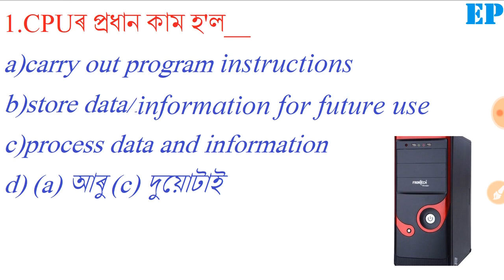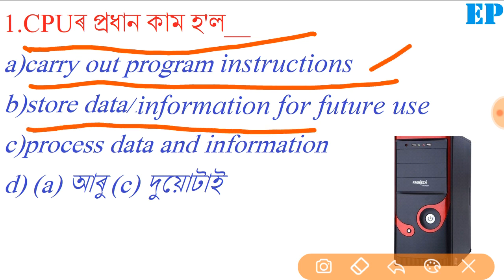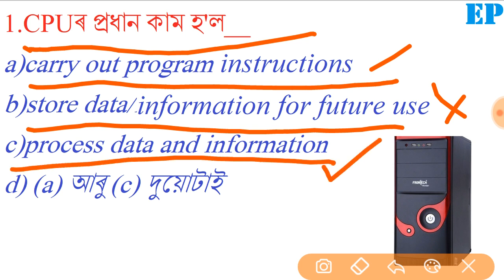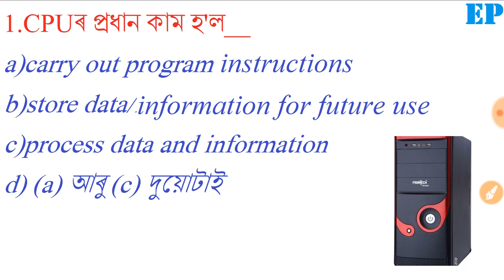Please like this video and subscribe to our channel. If you like this video, please share it. Now, option number C is to process data and information right away, so the CPU carries out program instructions and processes data and information. The right answer is option C — the CPU carries out program instructions and processes data and information.